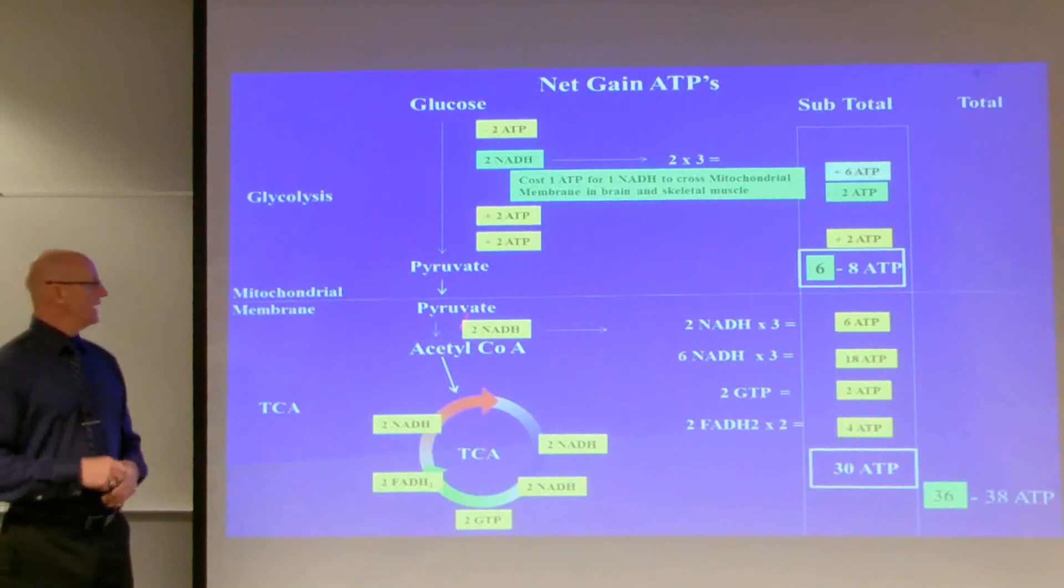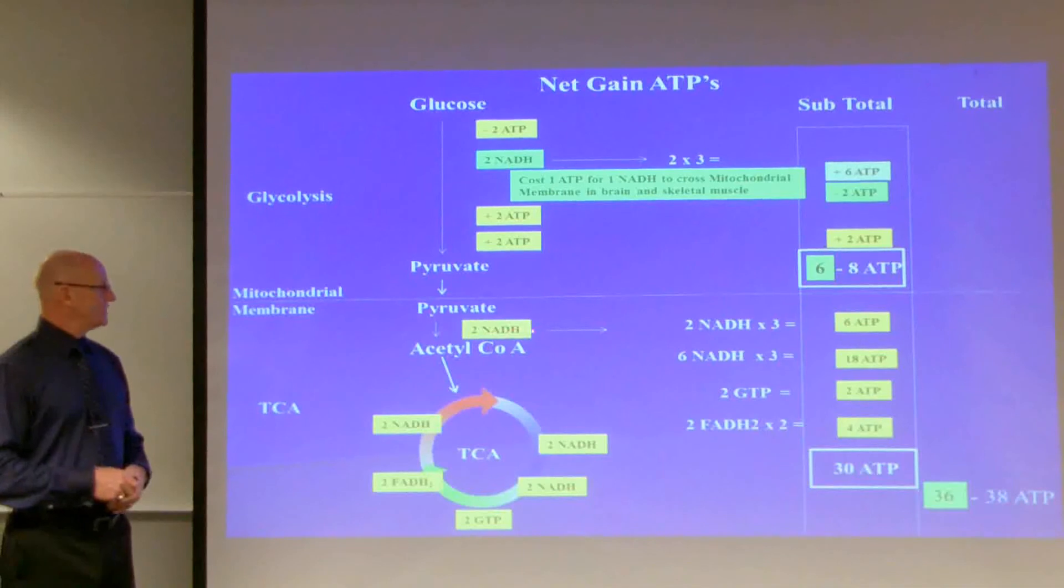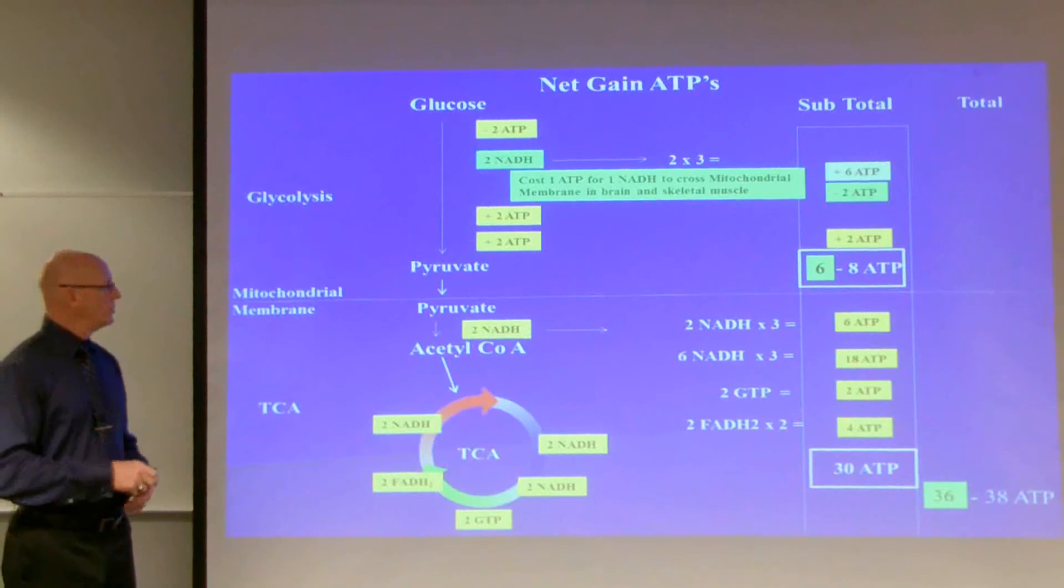Now, once we got pyruvate into the mitochondria, we converted that to acetyl-CoA and we were able to reduce the oxidized form of NAD and get two NADHs. So here we have two, and again, one of these will equal three ATPs, so two times three is six ATPs.